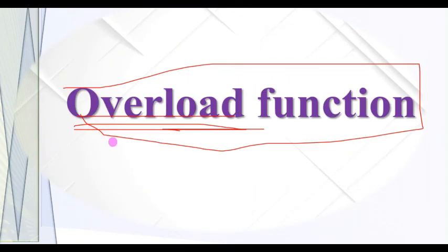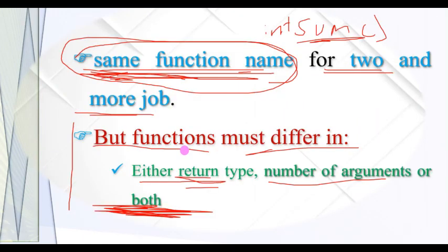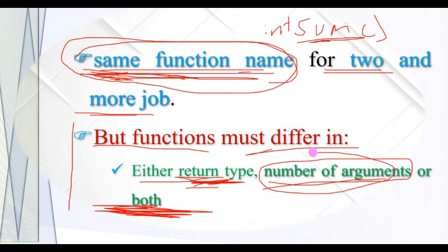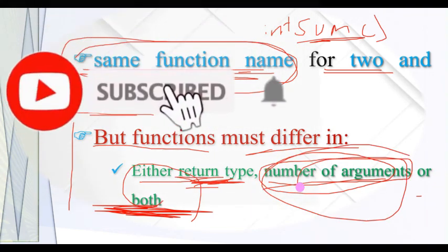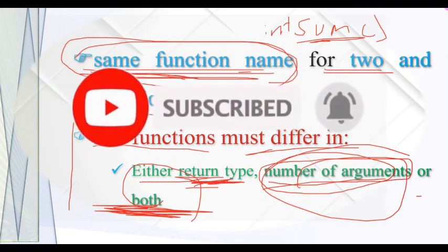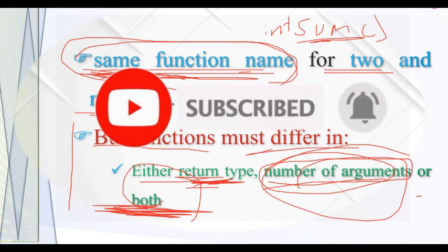Function overloading uses the same function name for two or more jobs, differentiated by the return type — integer for integer, float for float, double for double — and also by the number of arguments. At the same time, both return type and number of arguments are used to differentiate overloaded functions.